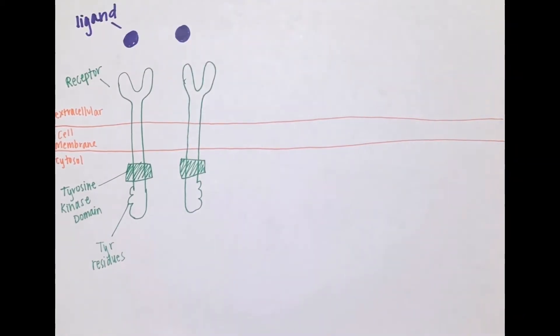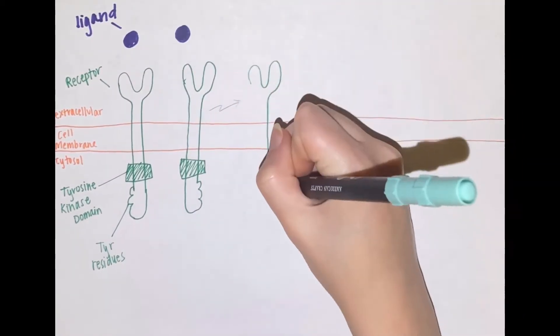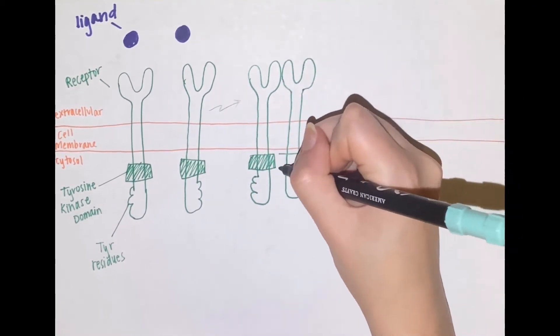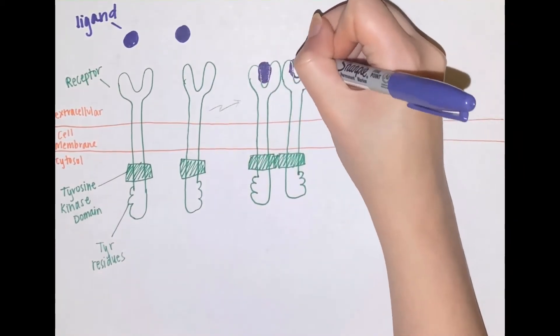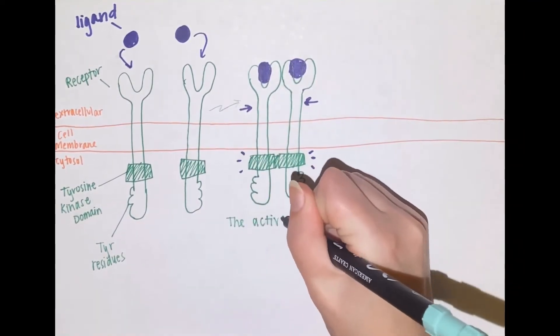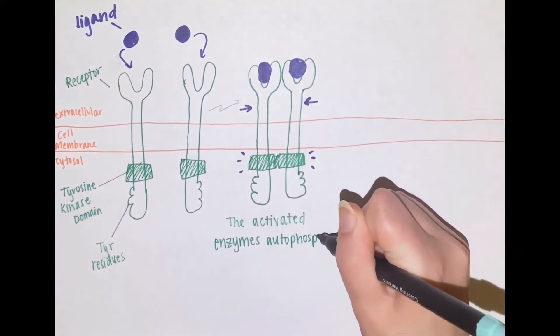The pathway starts by a signaling molecule binding to the receptor portion of this RTK. RTKs act in pairs, so once the ligand binds, the two receptors join to form what's called a dimer. This dimer activates the tyrosine kinase domains of the two RTKs.